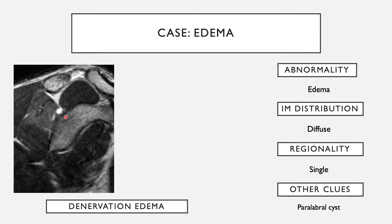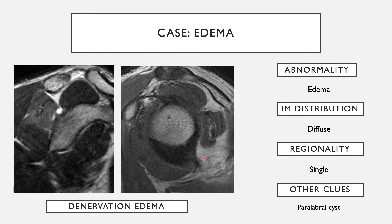As this condition progresses, one might see teres minor atrophy, which is seen fairly commonly in patients with shoulder problems, possibly due to incipient axillary nerve stretch. Remember: denervation edema can be in an acute phase where you see muscle edema, or in a chronic phase where you start to see muscle atrophy.